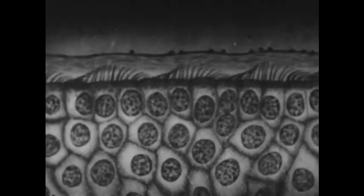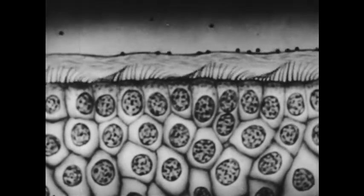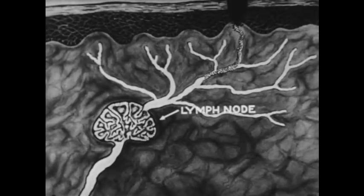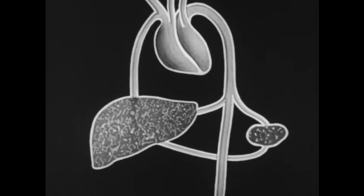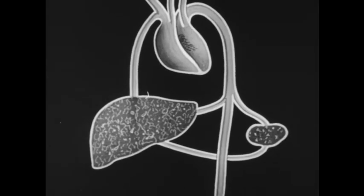Thus we have seen the body's three defenses. First, the skin and the mucous membrane which make difficult the entry of bacteria to the body. Second, the lymphatic system with its node filters. And third, the bloodstream with its primary filters: the liver and spleen.